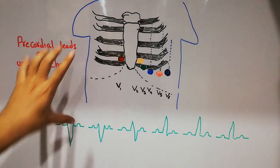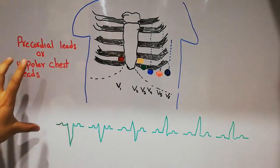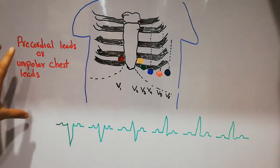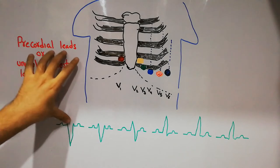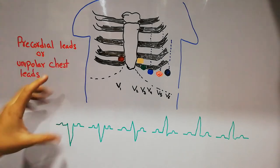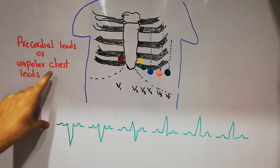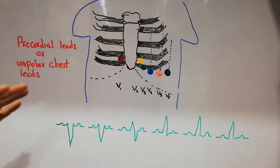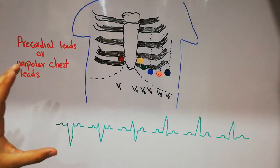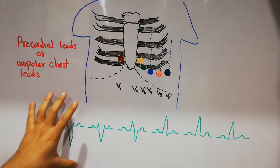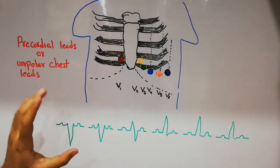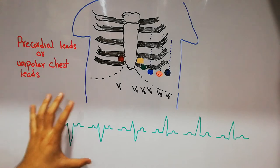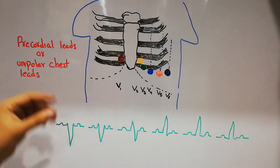In this lecture we are going to discuss the position or placement of the precordial leads, also called chest leads or unipolar chest leads. In the last lecture we discussed that the ECG is made of 12 leads: 3 leads are bipolar leads and 9 are unipolar leads.